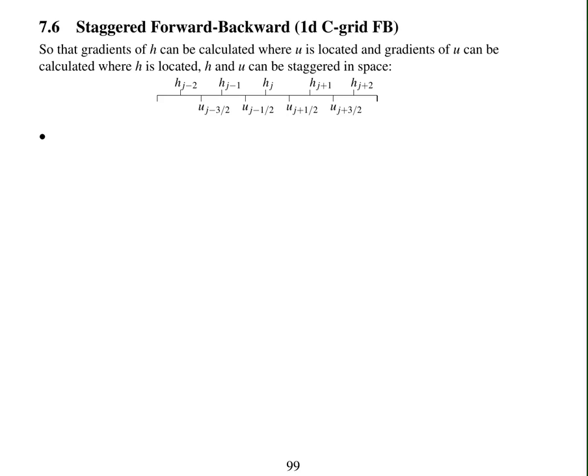To solve this problem, we don't store the height h and the velocity u at the same locations, we store them at staggered locations. This is a one-dimensional equivalent of a C grid, and we're still going to use forward-backward time-stepping.